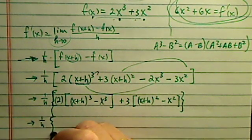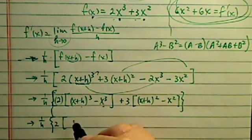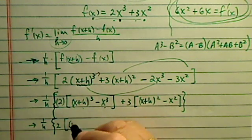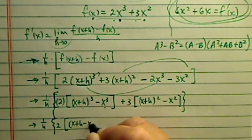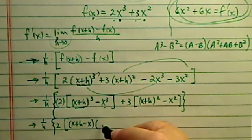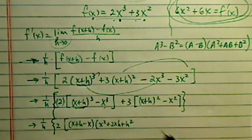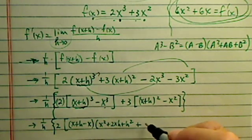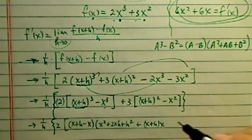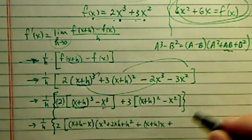1 over h. Let's have a 2 here, and then I have the cube process. So I have x plus h cubed minus x cubed, that's just 1, and then plus 3, that's this one and this one, so I have x plus h squared minus x squared. This is the whole thing.